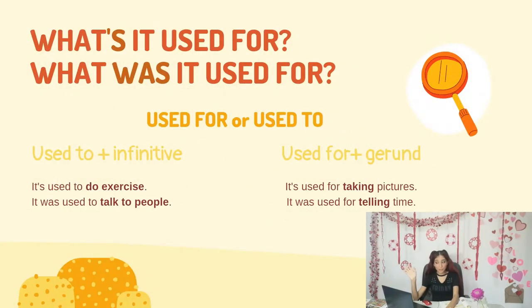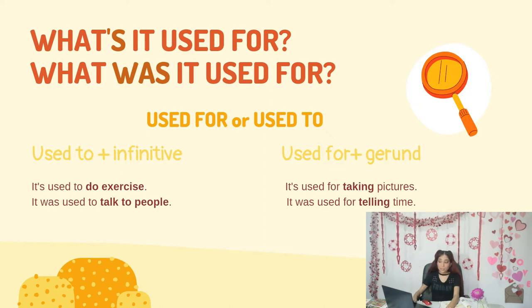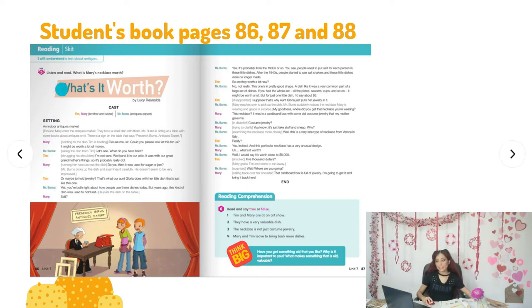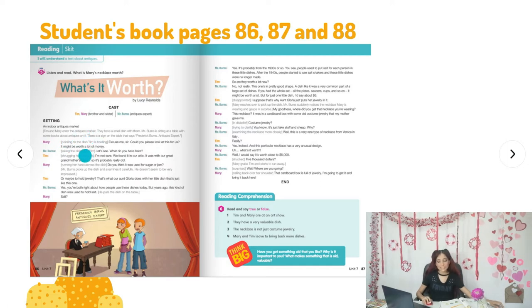I hope you've finished copying. If not, continue copying and you can finish watching the video later. Now we are going to go to the students' book pages 86, 87, and 88. First we will start with pages 86 and 87 where we have Activity 5 and 6: listen and read — 'What is Mary's necklace worth?' The title says 'What's It Worth?' — it's like a play. Let's listen to the audio.